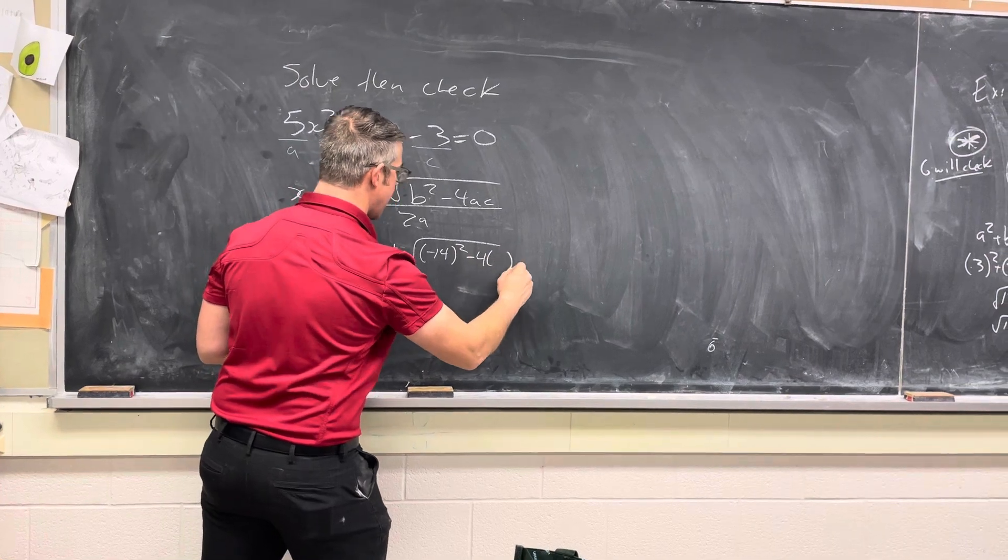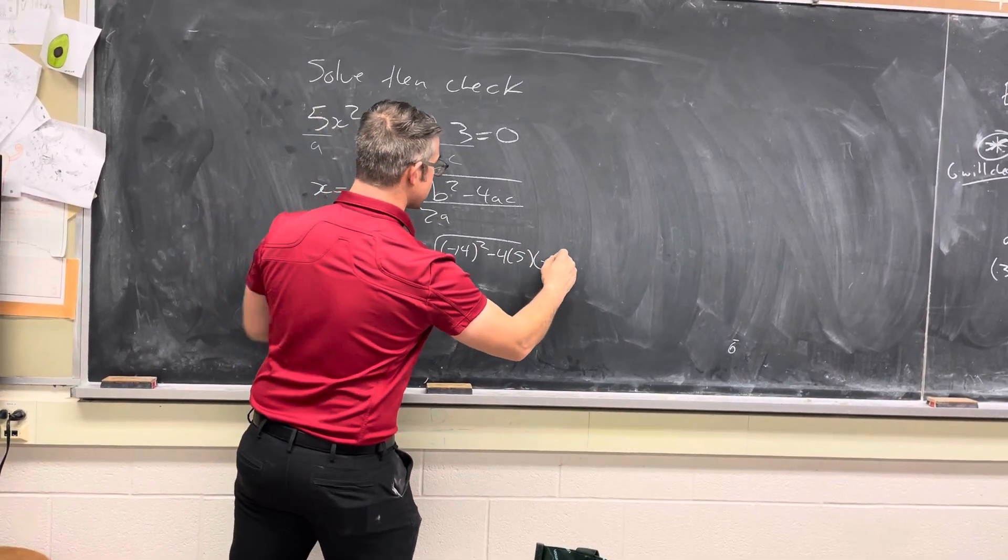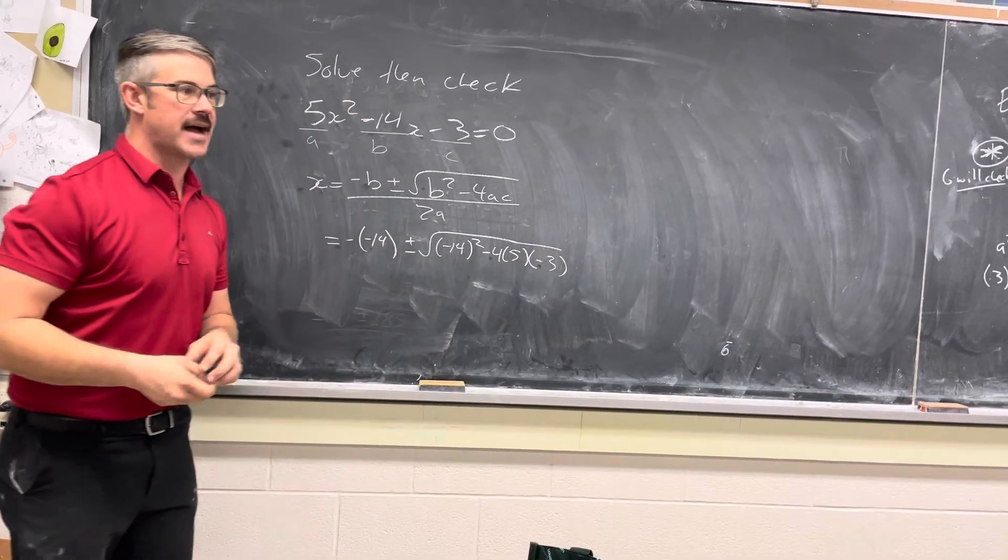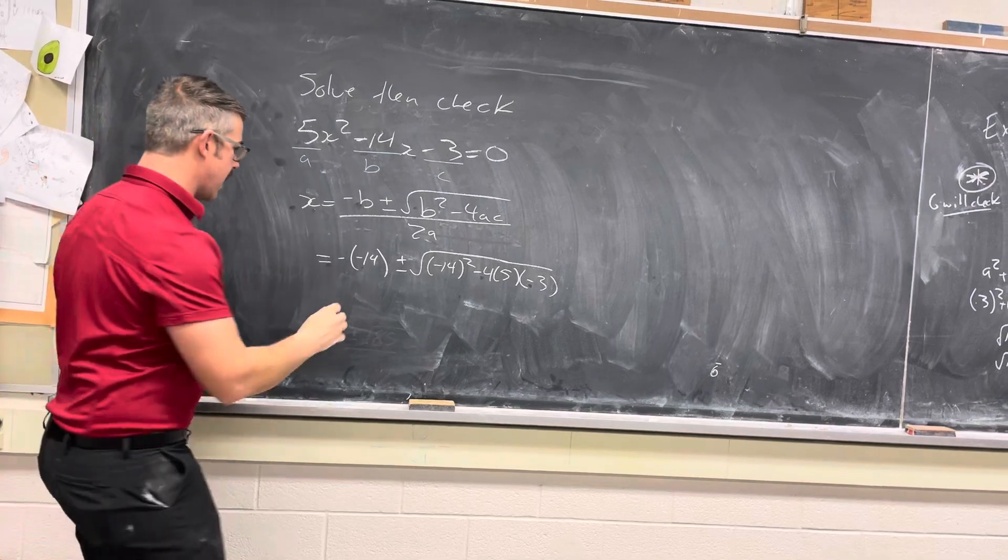Now, minus 4 times a, which is 5, times c, which is negative 3. Really important to remember that sign, because we want that to be a positive underneath the radical, otherwise it won't have roots.